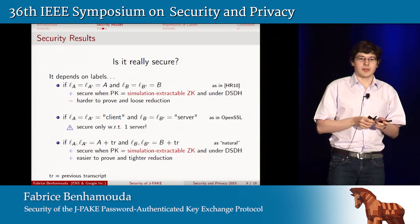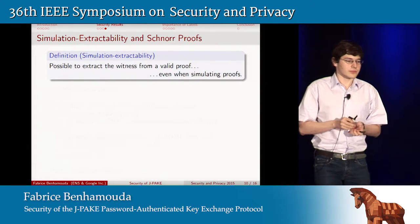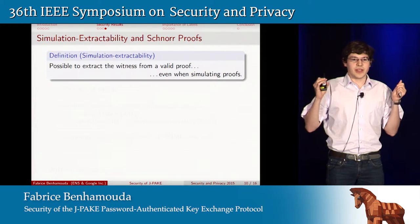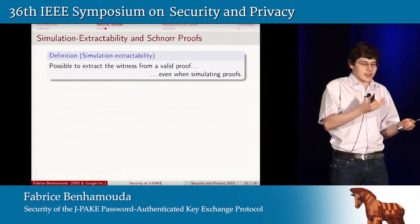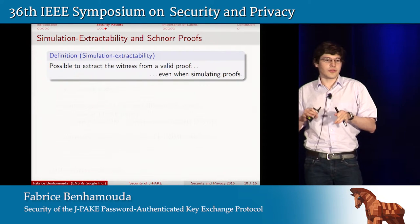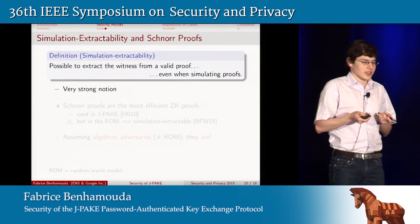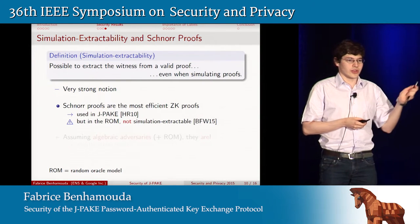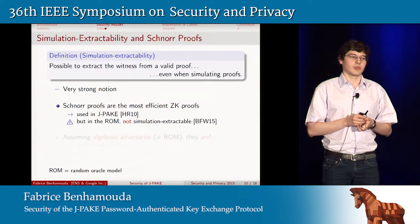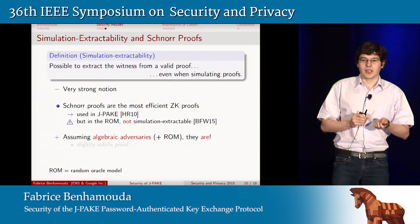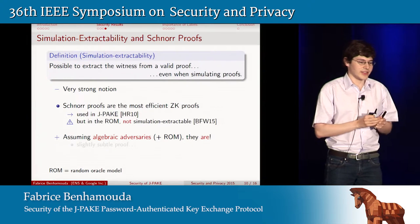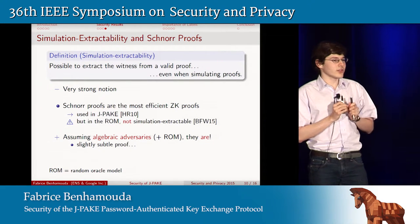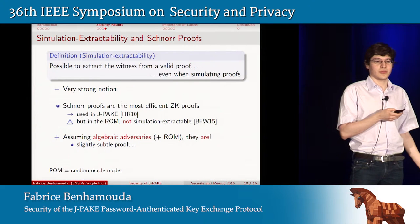What exactly is simulation extractability? It is a very strong property on zero-knowledge proofs, which basically says that if you have a valid proof, you can extract a witness from it, even while also simulating or faking proofs at the same time. In PKC 2015, it was shown that the Schnorr proofs used in JPEG are not simulation extractable in the random oracle model — you cannot prove they are. But assuming algebraic adversaries — slightly restricted adversaries that are still reasonable in practice — we can show that they are, and the proof is interesting and non-trivial.